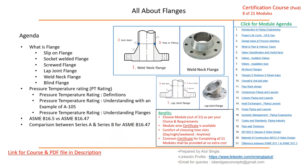In this section we'll discuss flanges — slip-on, socket welded, screwed, lap joint, weld neck, and blind flanges. We'll look at how each flange type is connected with the pipe, its function, and usefulness in the piping industry. We'll also understand pressure-temperature (PT) rating definitions.